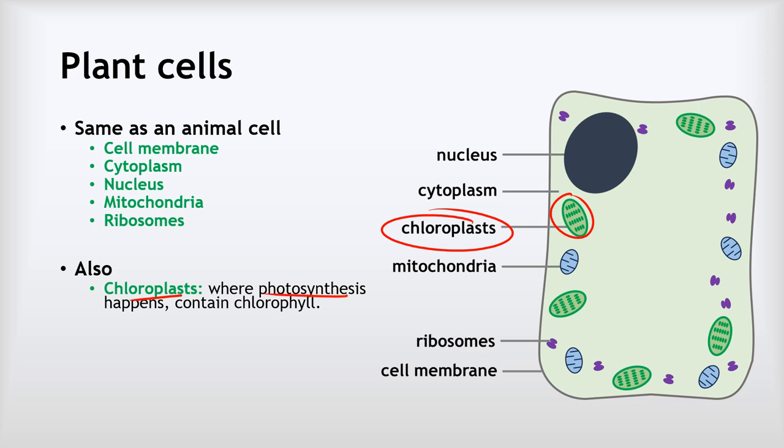The first of these is the chloroplasts - these green organelles that you can see here. Now the chloroplasts are where photosynthesis happens, and they contain chlorophyll to allow them to photosynthesize. The chlorophyll is the chemical that makes the chloroplasts green.